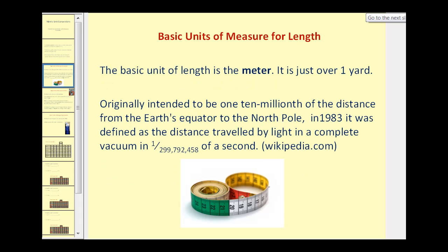Let's take a look at length first. The basic unit of length is the meter, which is just over one yard. Originally this was intended to be one ten-millionth of the distance from the Earth's equator to the North Pole, but in 1983 it was defined as the distance traveled by light in a complete vacuum in a very small fraction of a second.